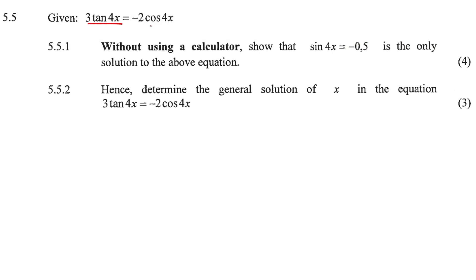Given that 3 tan 4x is equal to negative 2 cos 4x, without using a calculator, show that sin 4x equals negative 0.5 is the only solution. Okay, so they want us to solve.